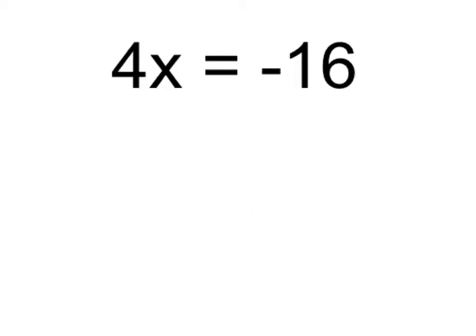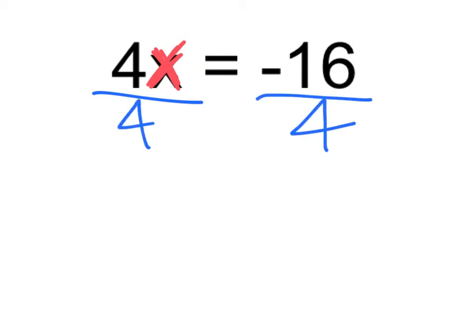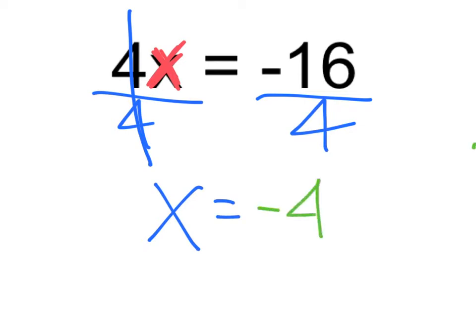So what do we need to do? We need to solve for x. The very first thing we need to do is make sure we get x by itself. We know that 4x means 4 times x, and the opposite of multiplication is division. So we're going to divide both sides by 4 to get x by itself. When we divide both sides by 4, these cancel out, so all we're left with on the left side is x, and on the right side we have negative 16 divided by 4, which gives us negative 4.